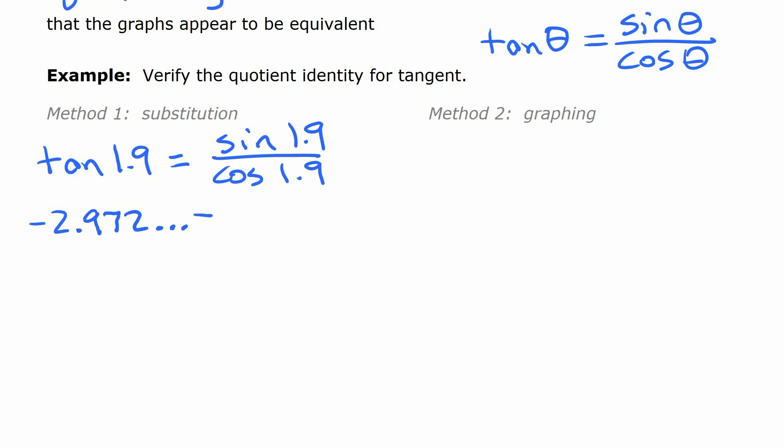I'm going to put dot dot dot there, equals negative 2.972. All right? So, that's the first way you can verify a trig identity or any identity, is to substitute in values like that.